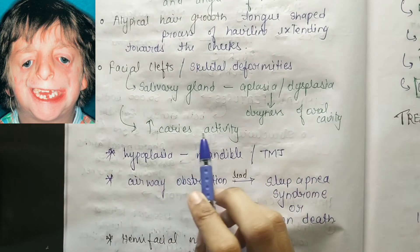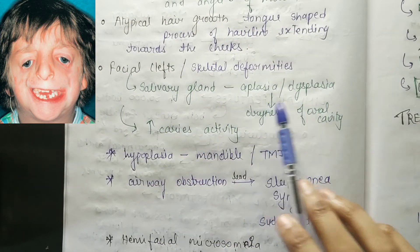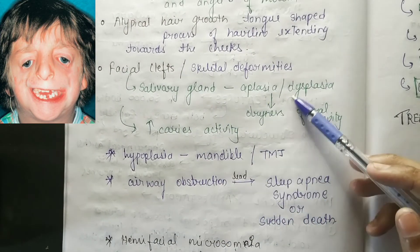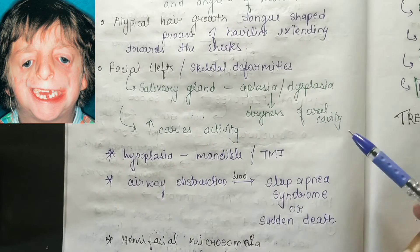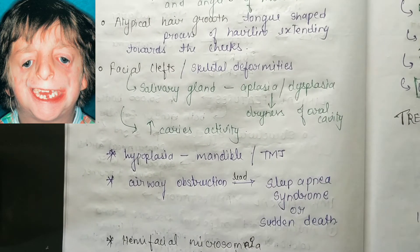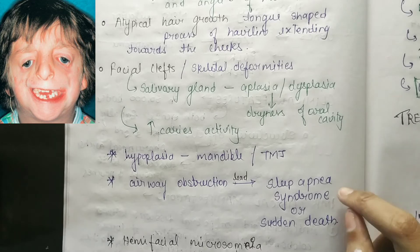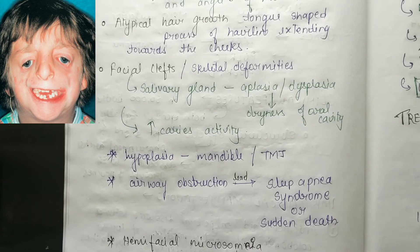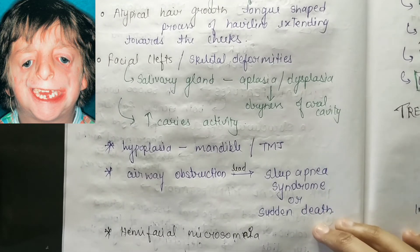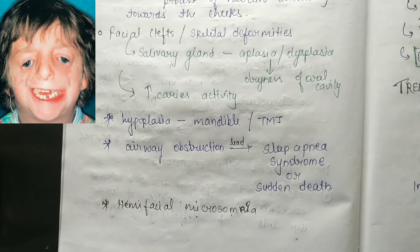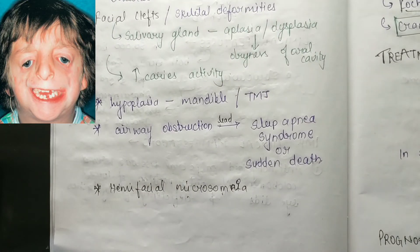Increased caries activity, salivary gland atresia and dysplasia result in dryness of the oral cavity. Hypoplasia of facial bones affects the TMJ. Airway obstruction can lead to sleep apnea syndrome or sudden death. Hemifacial macrosomia is also included in mandibular facial dysostosis.